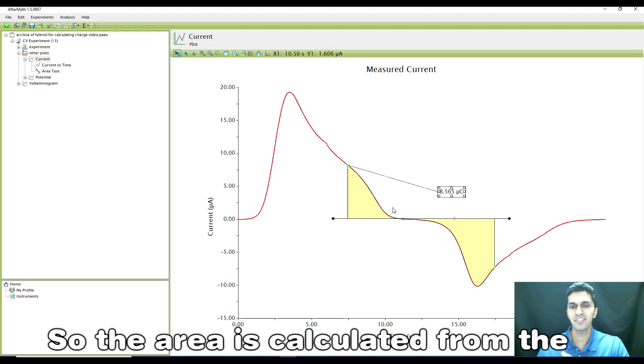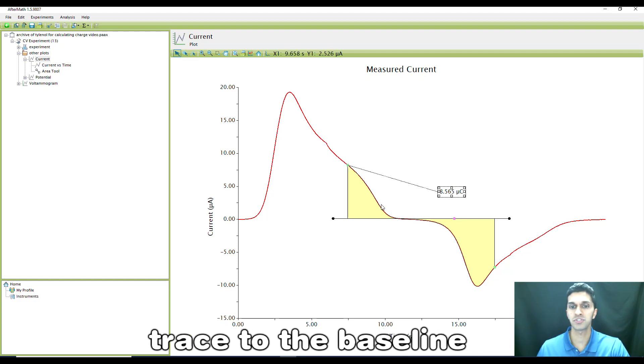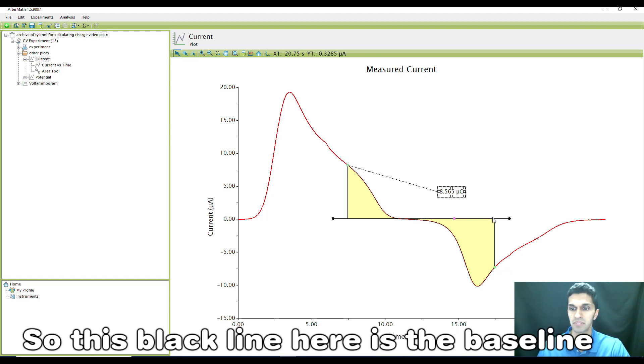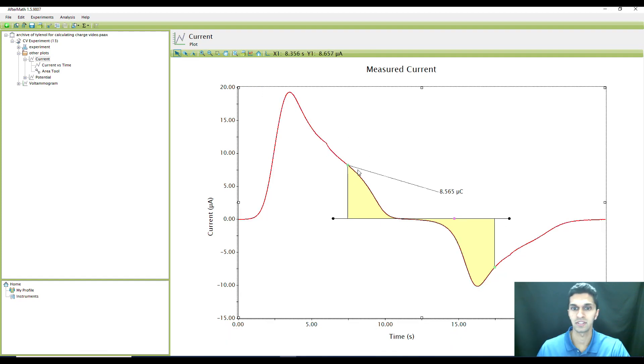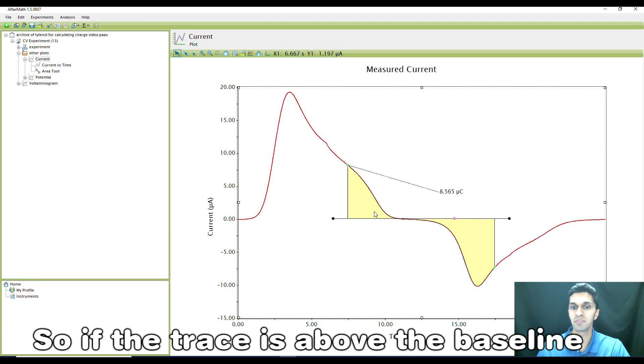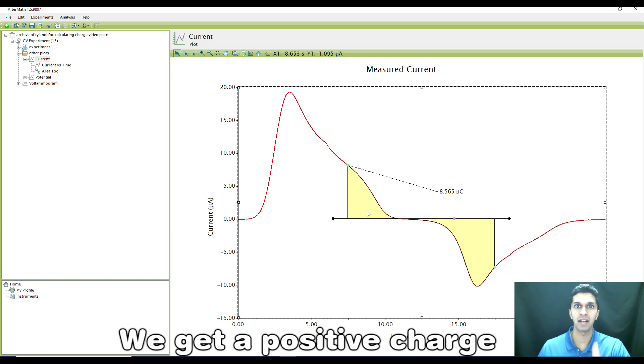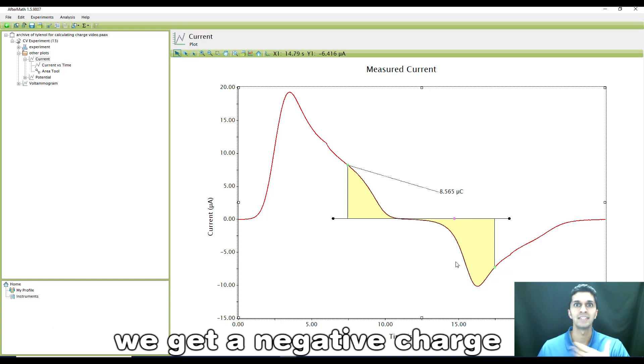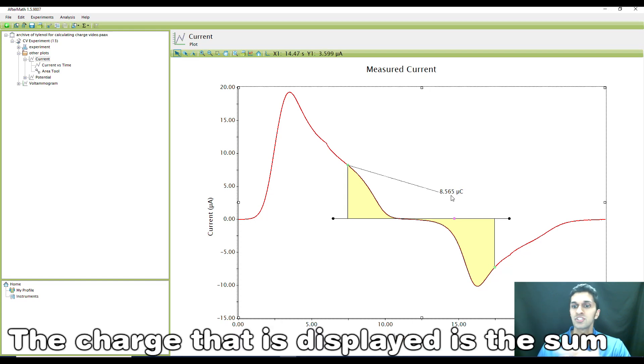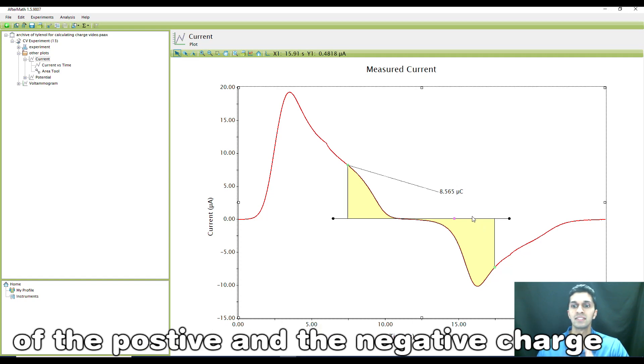The area is calculated from the trace to the baseline. This black line here is the baseline and the red curve is the trace. If the trace is above the baseline, we get a positive charge. If the trace is below the baseline, we get a negative charge. The charge that is displayed is the sum of the positive and the negative charge.